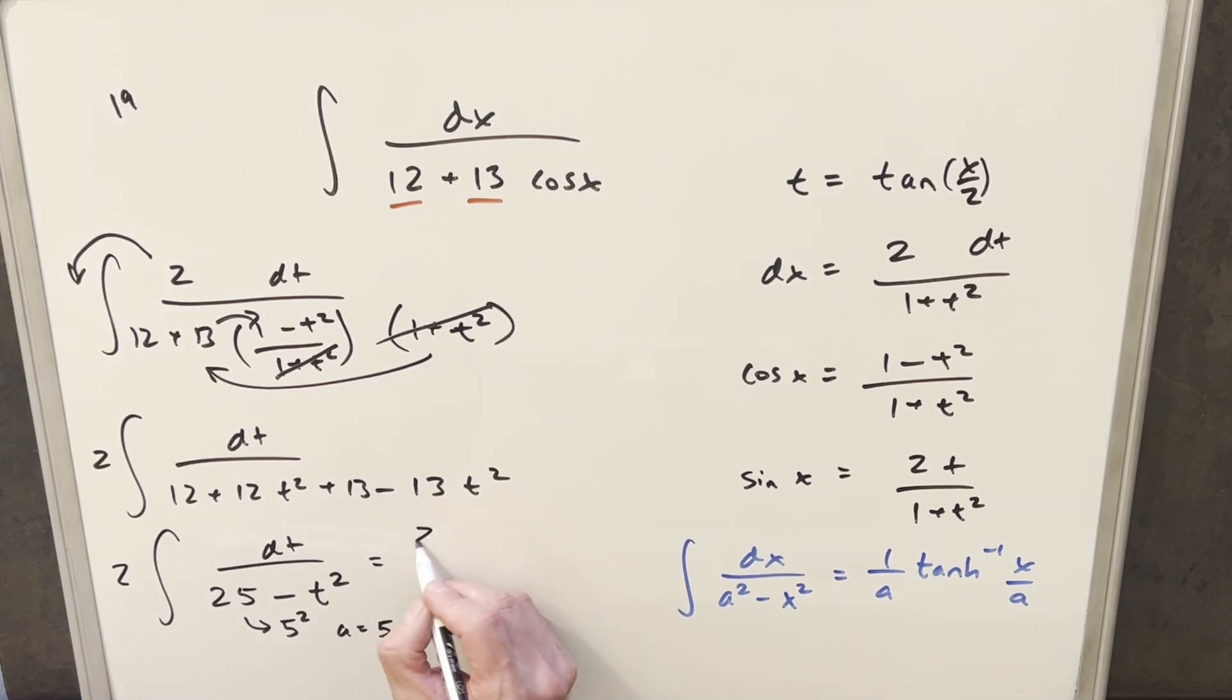So then we'll just use this formula. So we're going to have 2 over 5 inverse hyperbolic tanh of our variable t over a again, which is just 5.